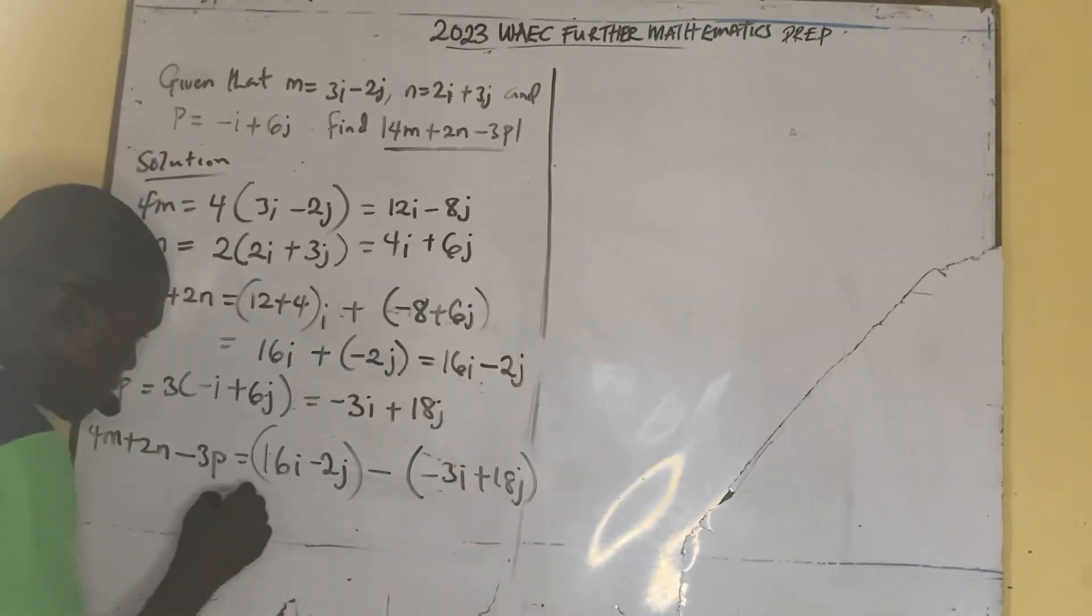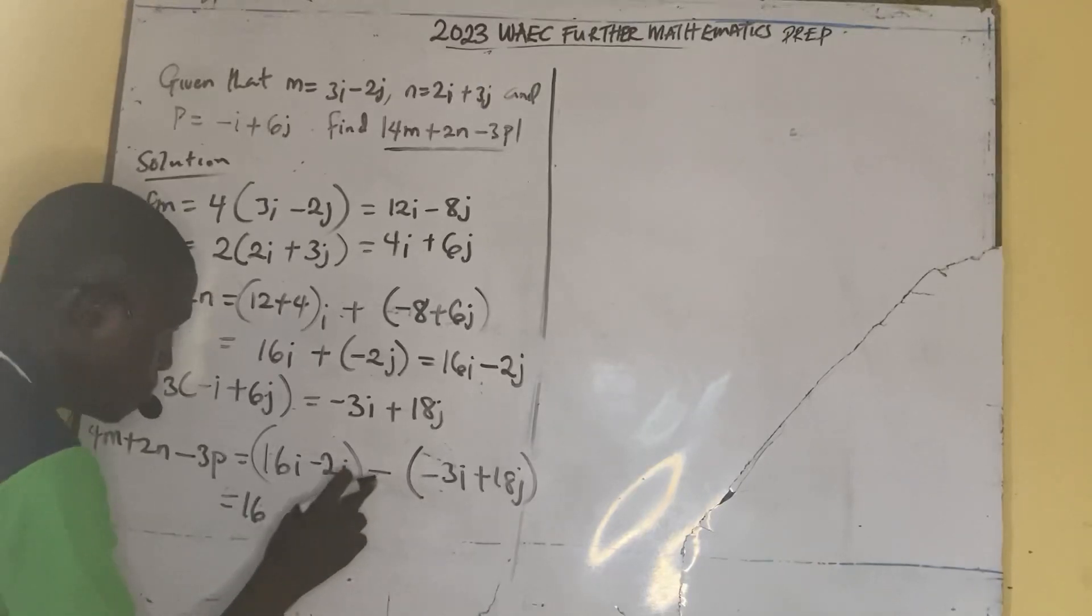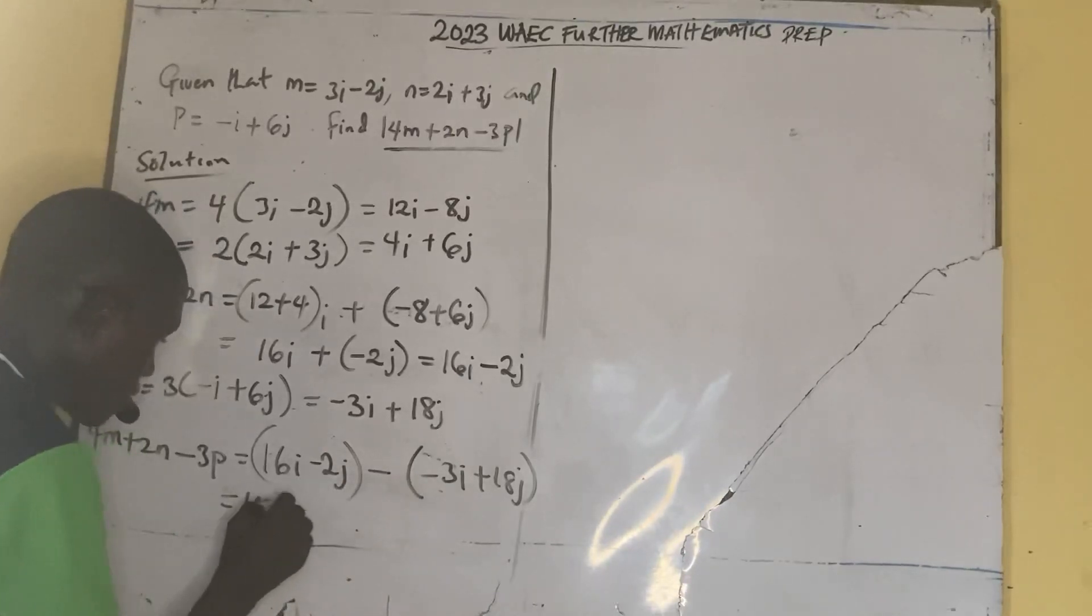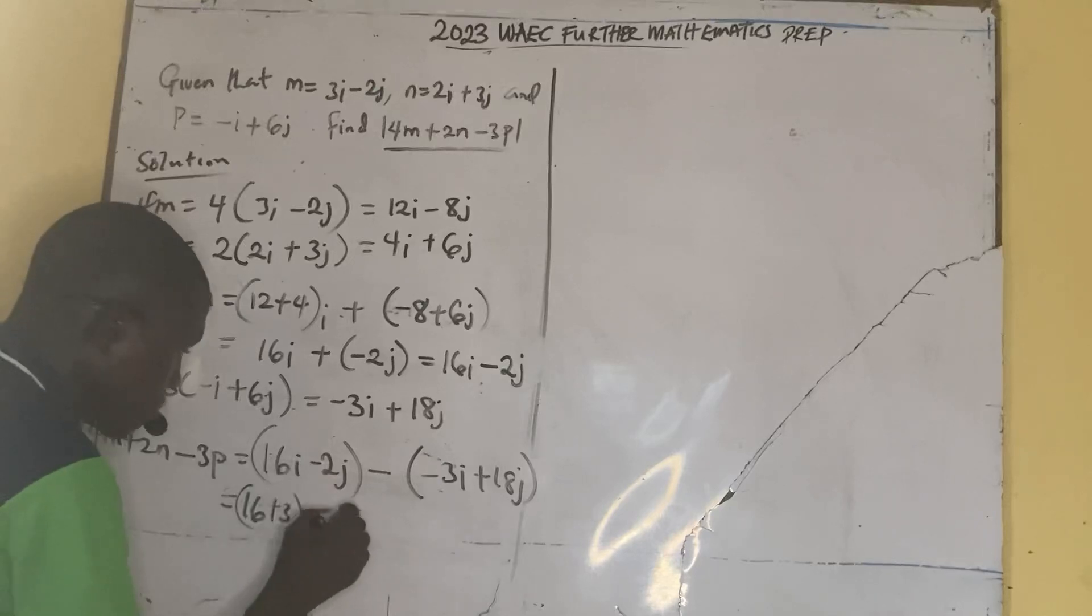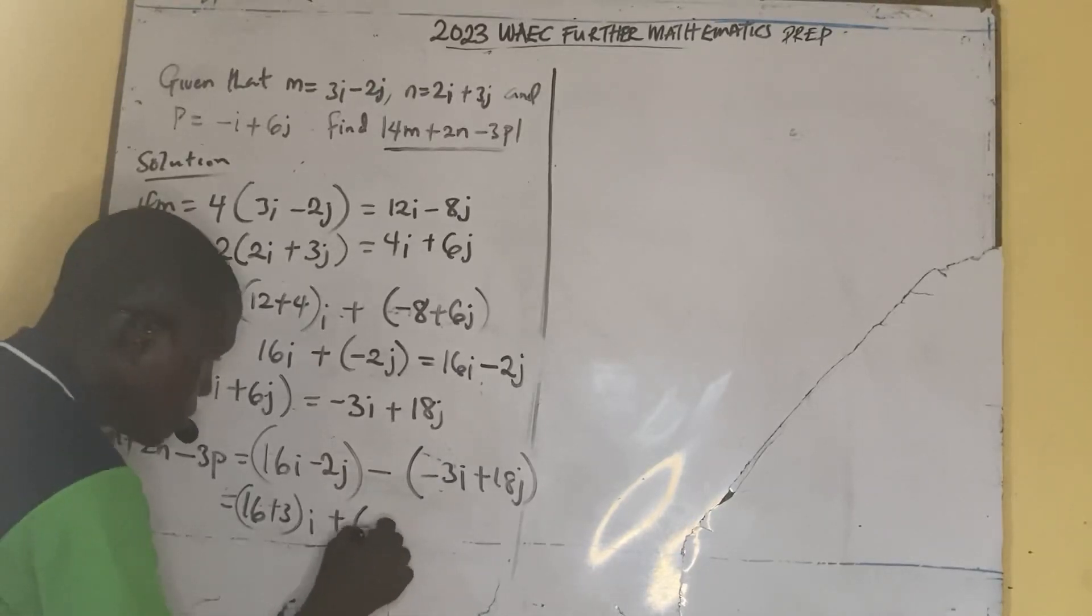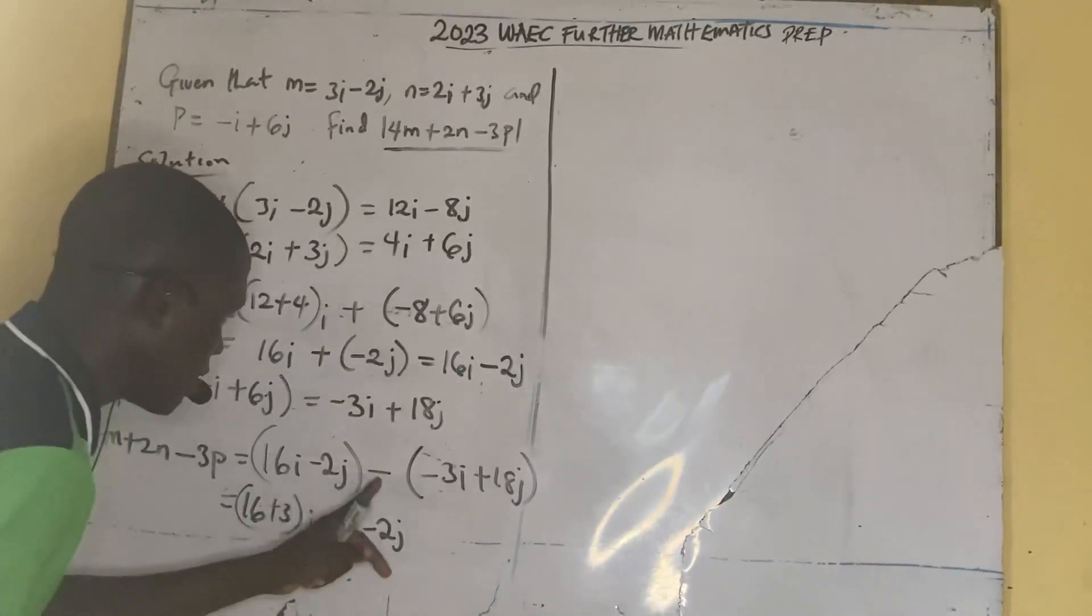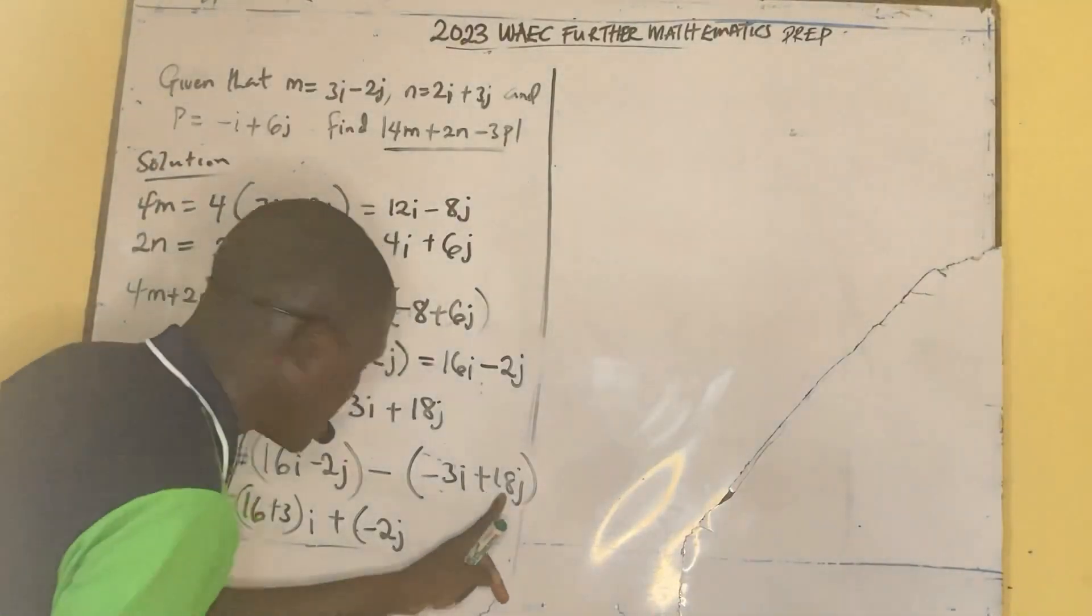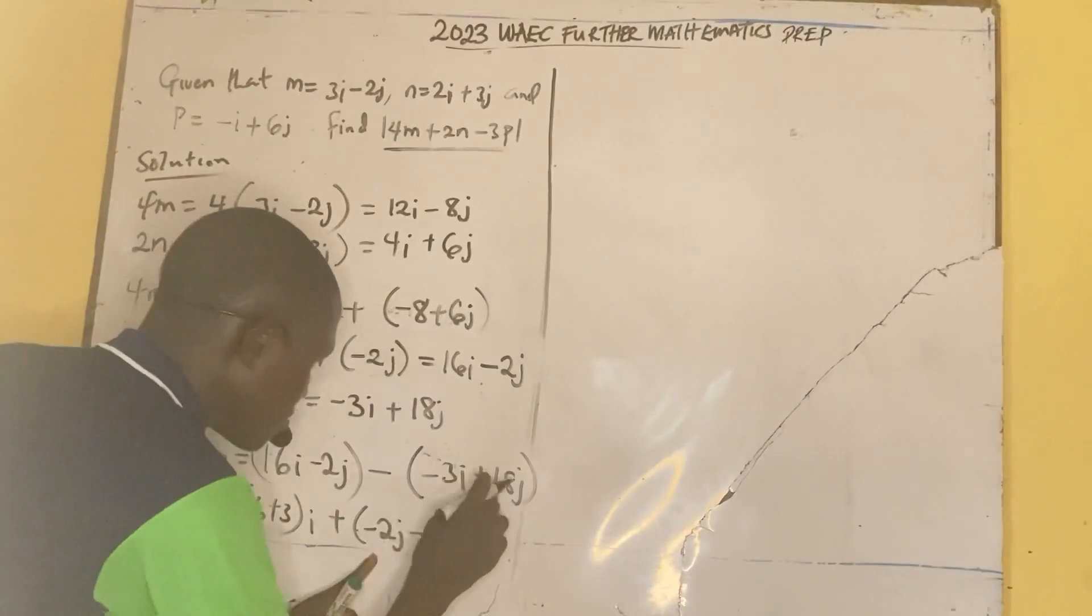So minus, you have to put this minus in bracket, minus 3i plus 18j. Why am I putting it in brackets? Because of this minus. You have to affect this. So you have to be careful with it. We have 16i minus minus 3i is plus 3i. Then we have minus 2j plus, minus times plus is minus, minus 18j.